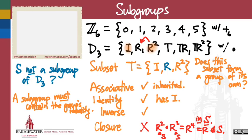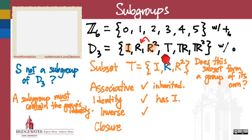How about closure? If I multiply I by anything, it's going to remain. If I multiply R by R squared or by itself or R squared by itself, those are just going to give me other powers of R, either identity or R or R squared. So closure will be satisfied. And all four of these being satisfied, we now will say that T is, in fact, a subgroup of D3.